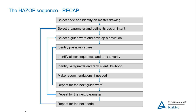What safeguards exist to prevent the hazard occurring in the first place? Do we have control systems? Do we have valve position indicators? And then what corrective actions can be applied to prevent or mitigate against the hazard progressing towards its consequence? What shutdown systems are there? Are there pressure relief valves in the system? The process is then repeated for each guide word, each parameter, and each node.